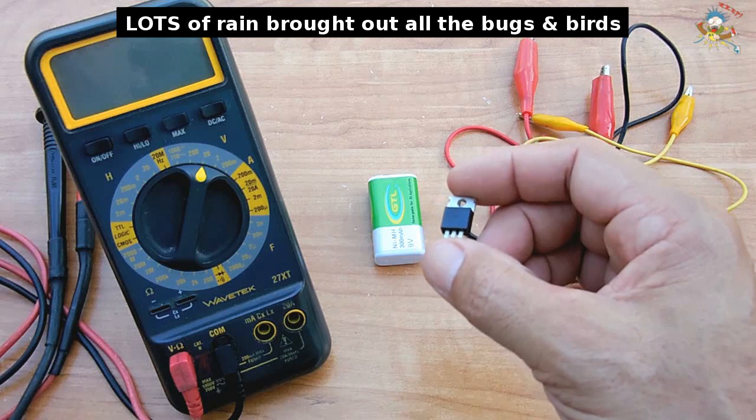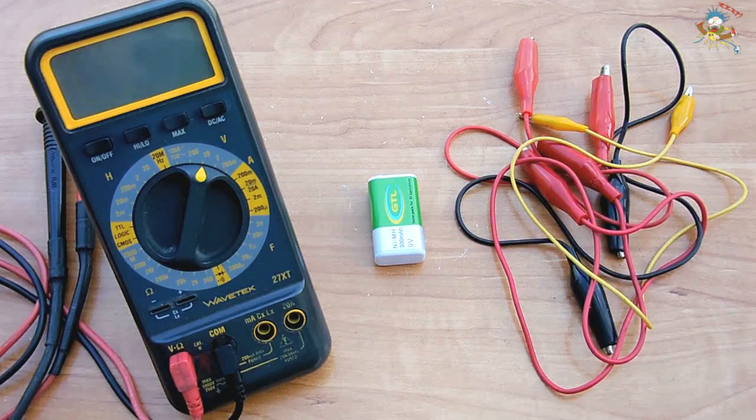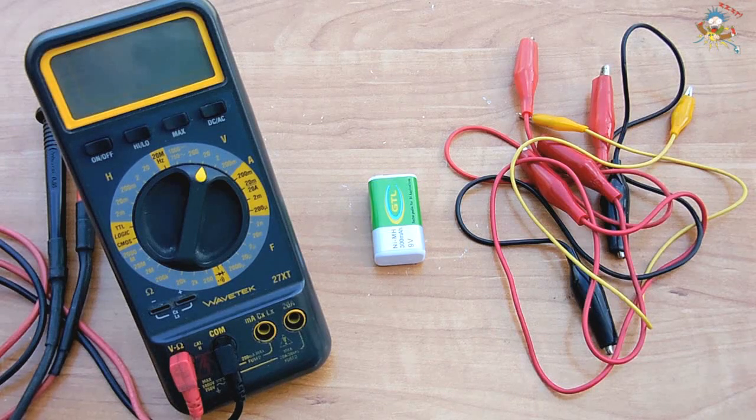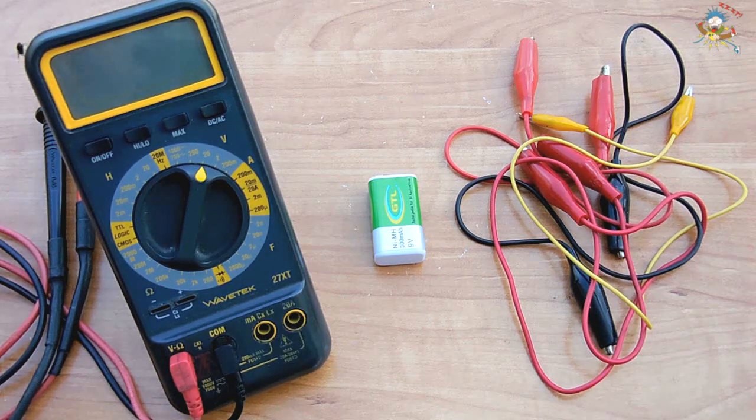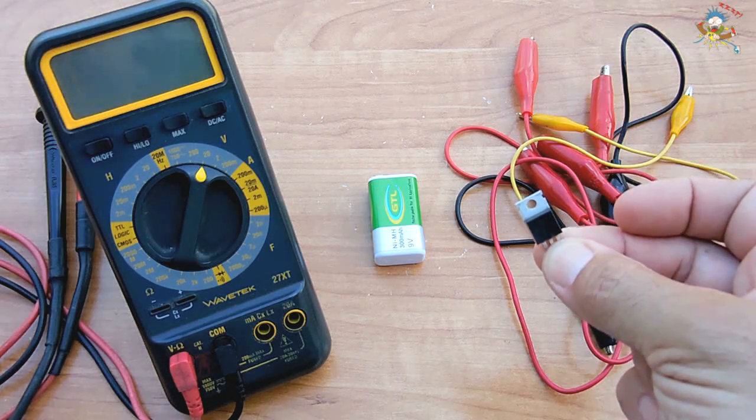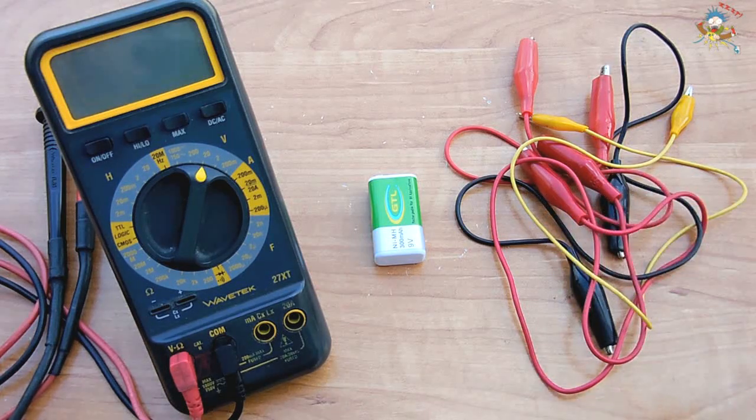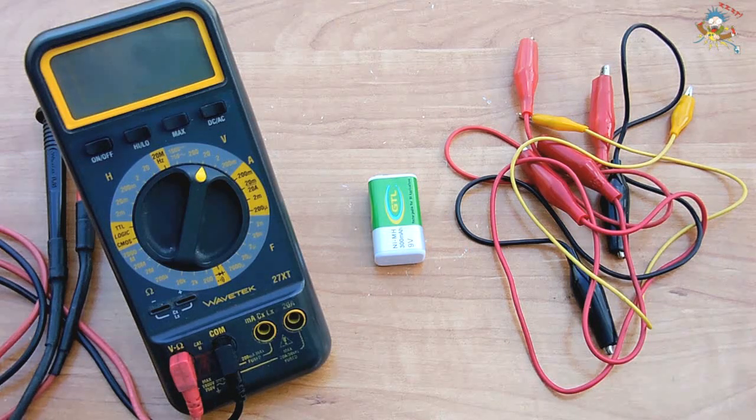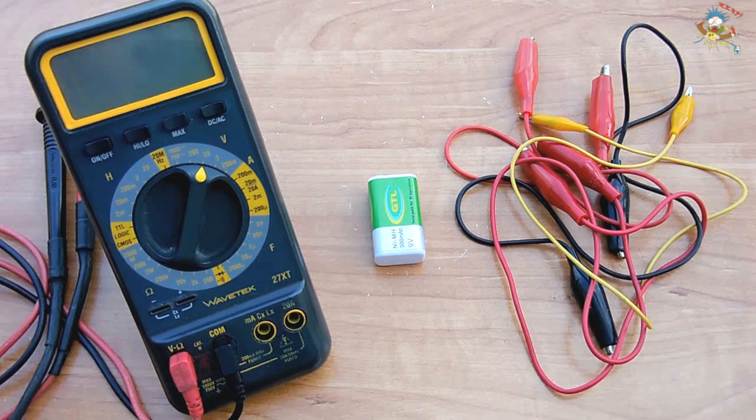SCRs are available in many different packages and current ratings. The one you see here is a 12 amp TO-220. I have a few others as well in a TO-92 package. SCRs are unidirectional devices which means that current is only able to flow in one direction.